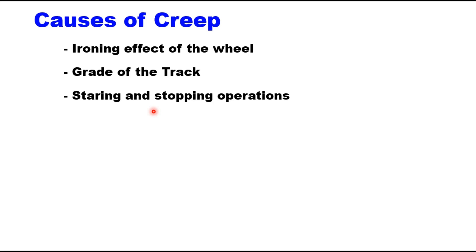Starting and stopping operations also cause creep. When a train is starting or accelerating, the backward thrust on the locomotive wheels tends to push the rail backward. Similarly, when the train is slowing down or coming to a stop, the braking effect of the locomotive tends to push the rail forward. This causes creep in one direction or the other, or in both directions of traffic.